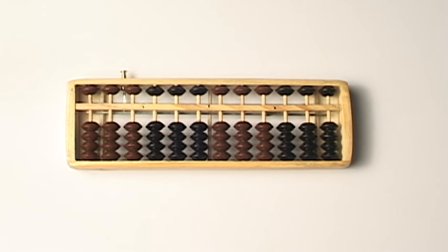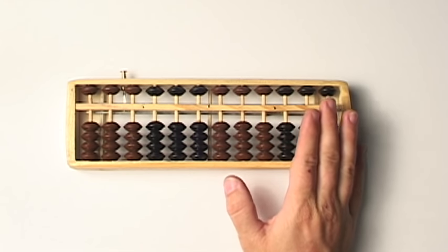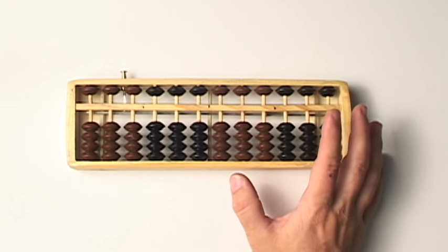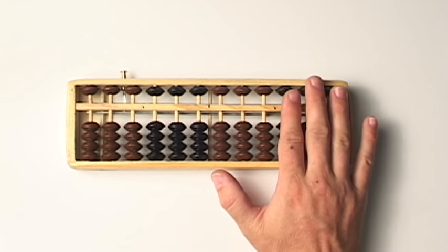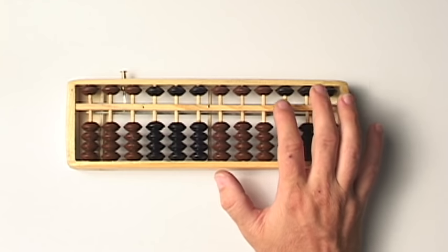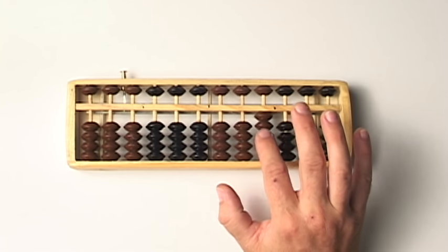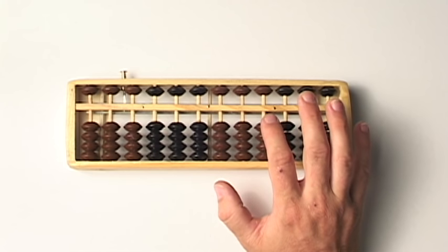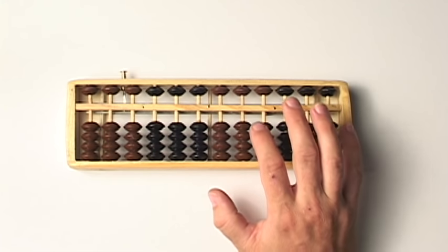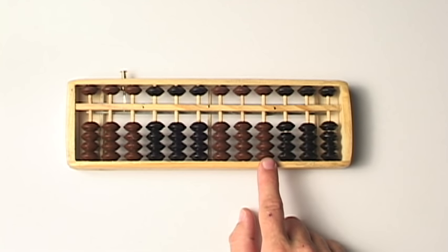One more thing before we start counting is that for now, I want you to not worry about these three beams right here. After this dot that you see right here, we're going to have this beam be our ones column. This is where we're going to start counting, the first brown column here, or the third one from the right.